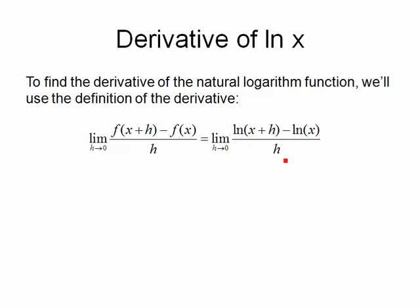You'll notice that if we went ahead and put 0 in place of h, we'd end up with 0 over 0, meaning we probably need to do some simplifying here before we can actually do that derivative.